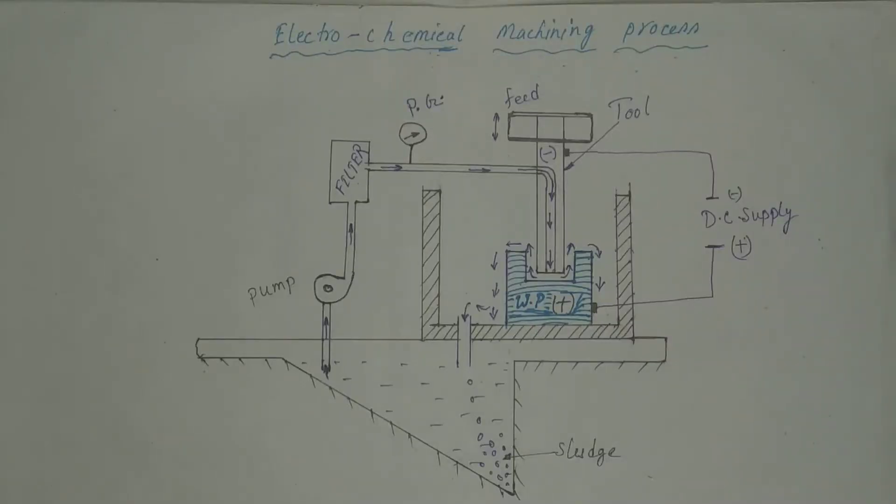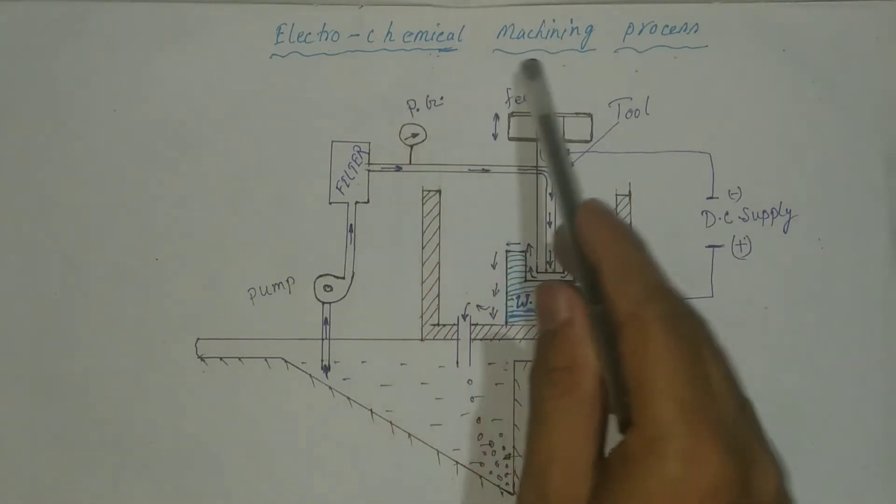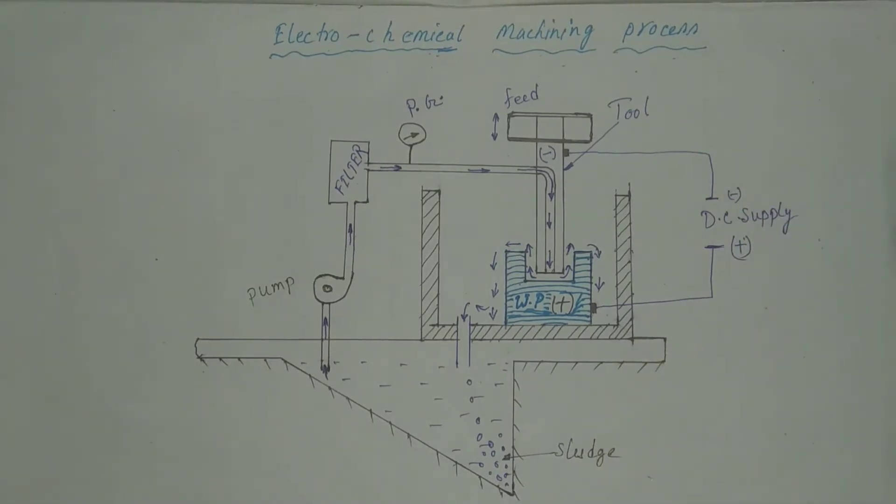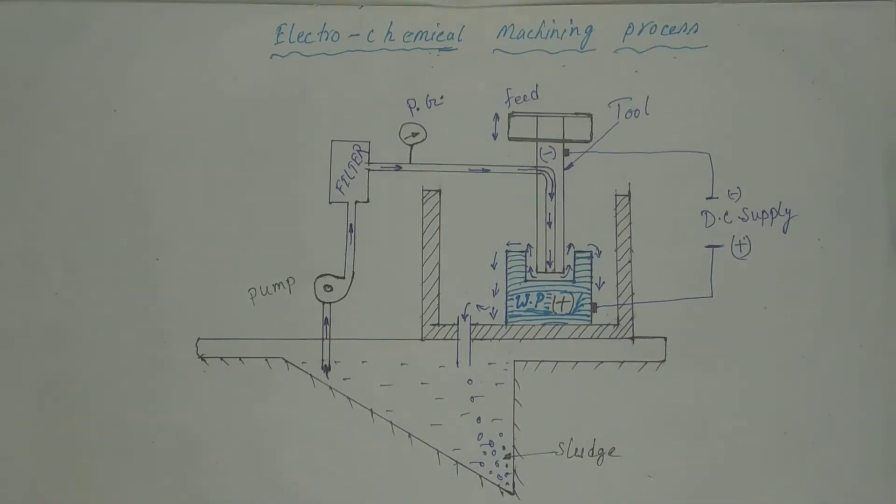Today, I am going to show you the working principle of electrochemical machining process. It is a non-conventional machining process and this is an extension of electroplating process with some modification but in reverse direction.